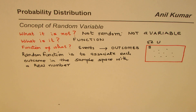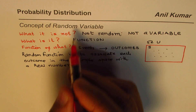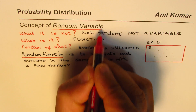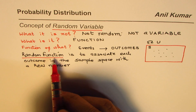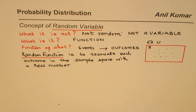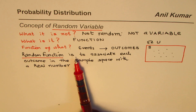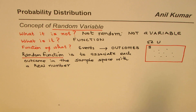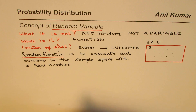A random function is actually the same as a random variable — these two are the same things. We are calling it a random function to understand, and then we'll switch over to 'variable' whenever required. So a random function is to associate each outcome in the sample space with a real number. Let me give you a concrete example.